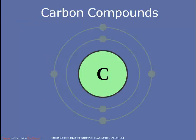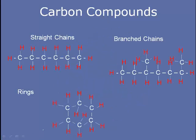What are carbon compounds? Well, first, let's get to know carbon. Here's a Bohr model of a carbon atom. In it, you can see that it has four outer shell electrons. This means that it has four locations where bonding can occur. This can result in all sorts of different carbon compounds.